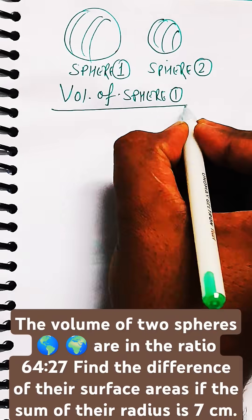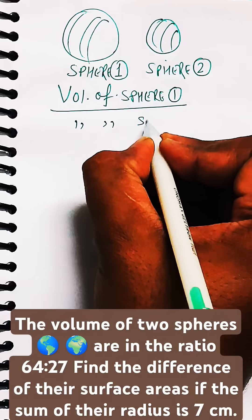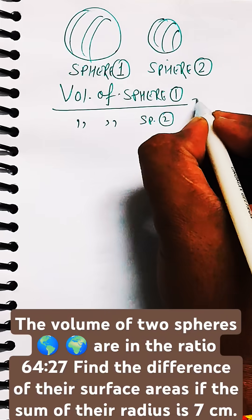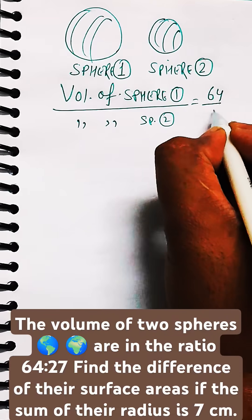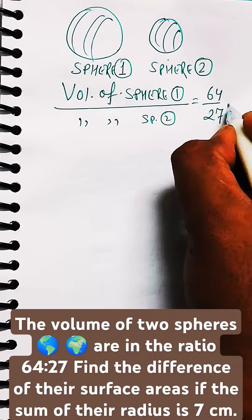The first sphere to the ratio of the volume of sphere two is equal to 64 by 27.